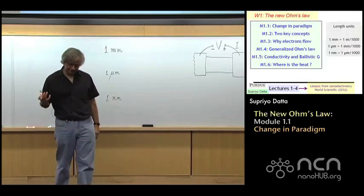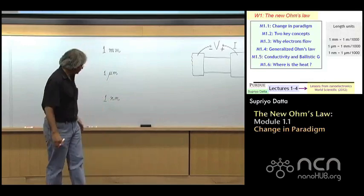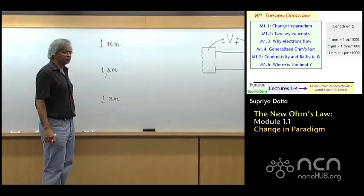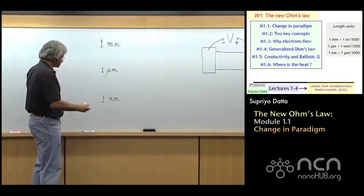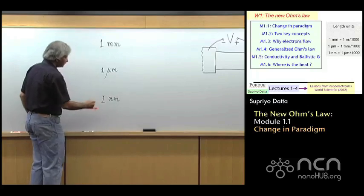Atomic distances, that is, the distance between atoms, is typically a little less than a nanometer. That is, maybe two-tenths or three-tenths of a nanometer. So atomic distances would be somewhere down here.